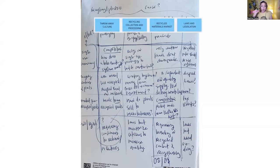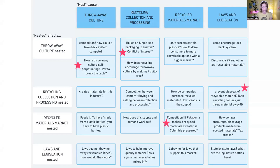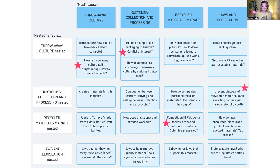So many interesting questions came up. I came up with no solutions — all I did was come up with blind spots I hadn't even thought about, just through thinking about how these things intersect. The recycled material market to itself got me thinking about competition: if Patagonia makes a recycled materials sweater, does that pressure Columbia to do the same?